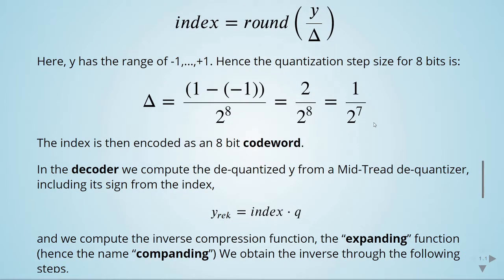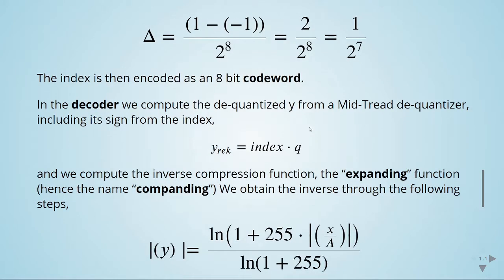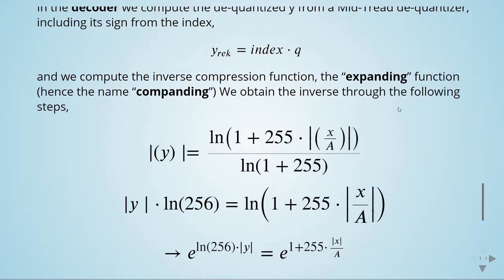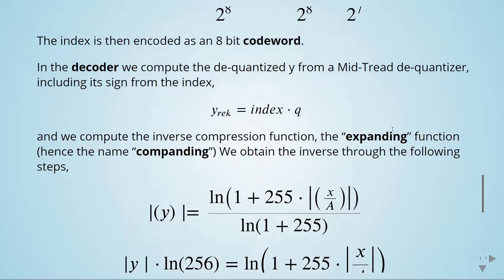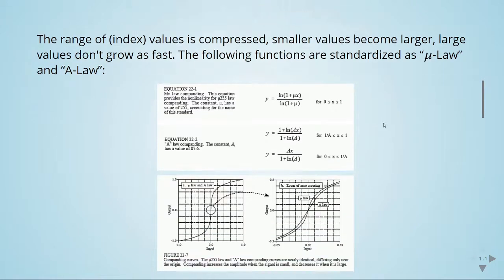In the decoder, we compute the dequantized y from the mid-tread dequantizer, including its sign from the index. We compute the inverse compression function, the expanding function. We obtain the inverse through the following steps. Here we have the equation for the compression function and we need the inverse of this.